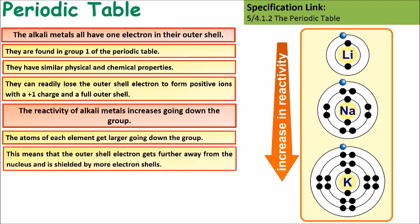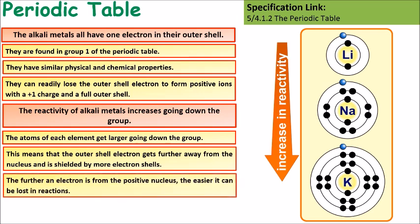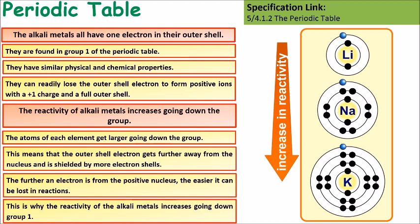This means that the outer shell of electrons gets further away from the nucleus and is shielded by more electron shells. The further an electron is from the positive nucleus the easier it is for that electron to be lost in a reaction. Therefore as you go down the group the more reactive the atom becomes.